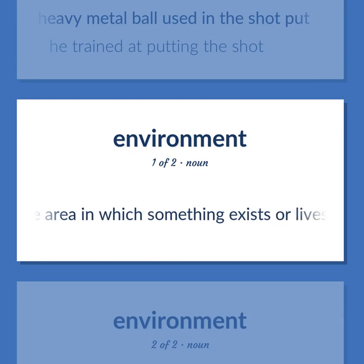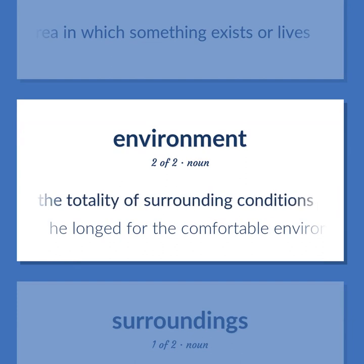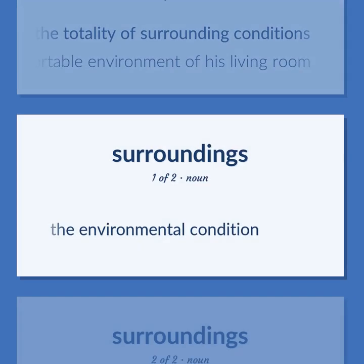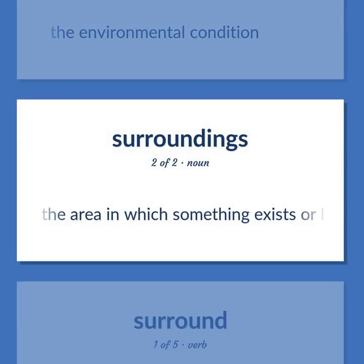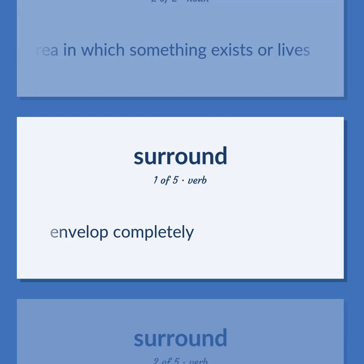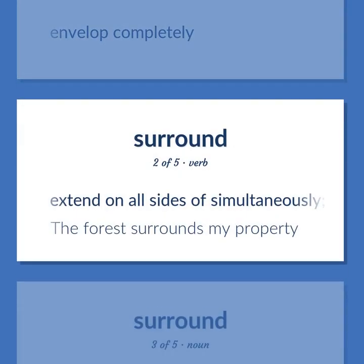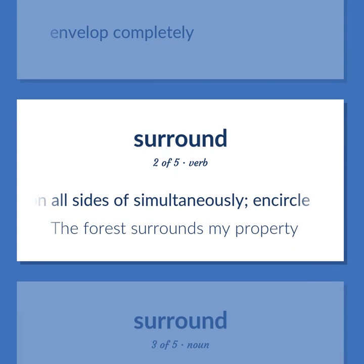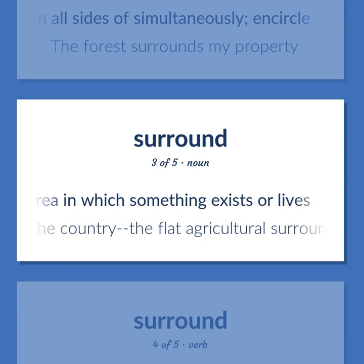Environment: The area in which something exists or lives. The totality of surrounding conditions. He longed for the comfortable environment of his living room. The environmental condition. Surround: The area in which something exists or lives. Envelop completely. Extend on all sides of simultaneously and circle — the forest surrounds my property. The area in which something exists or lives. The country; the flat agricultural surround.